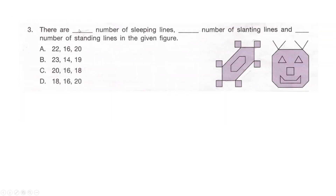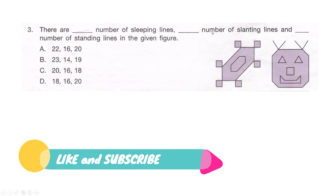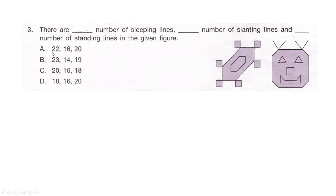Question three: there are blank number of sleeping lines, blank number of slanting lines, and blank number of standing lines in the given figure. Is it option A: 22, 16, and 20; option B: 23, 14, and 19; option C: 20, 16, and 18; or option D: 18, 16, and 20? Count those line types from the figure. Your time starts now.